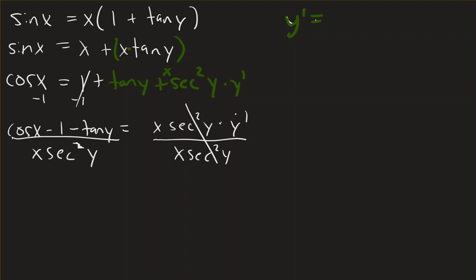And now I've got the derivative of y. The derivative of y with respect to x would be cosine x, minus 1, and minus tangent of y, all of that divided by x times the secant squared of y.